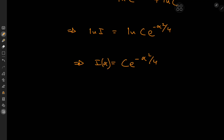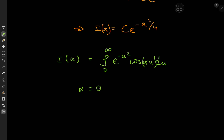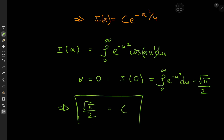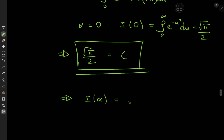All we need to do now is determine the constant of integration c. Recalling that I of alpha is the integral from 0 to infinity of e to the negative u squared times cosine of alpha u du, a convenient value is alpha equals 0, giving I of 0 equal to the integral from 0 to infinity of e to the negative u squared du — which is of course the Gaussian integral, equal to root pi over 2. Plugging in alpha equals 0 gives root pi over 2 equals c times e to the 0, so c equals root pi over 2.